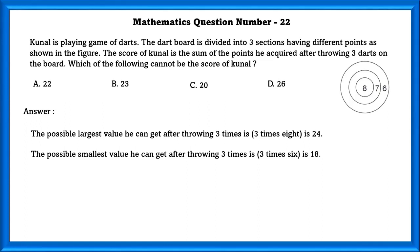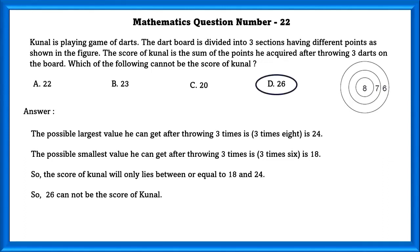So whatever score he gets, he gets it in between 18 and 24. So the impossible value that Kanul could not score is 26.